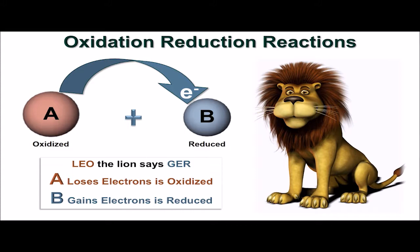Oxidation is the loss of electrons, and reduction is the gain of electrons. In a redox reaction, one substance loses electrons and is oxidized, and one substance gains electrons and is reduced.